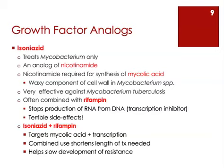When you combine isoniazid and rifampin, you get a very good effect against the organism that causes tuberculosis. You hit these microbial cells in two ways: you prevent them from making mycolic acid, and you prevent them from doing transcription normally. When the two drugs are combined, a patient being treated for tuberculosis can be treated for a shorter period of time, and we've seen that the combination of drugs helps slow the development of resistance in the bacteria.